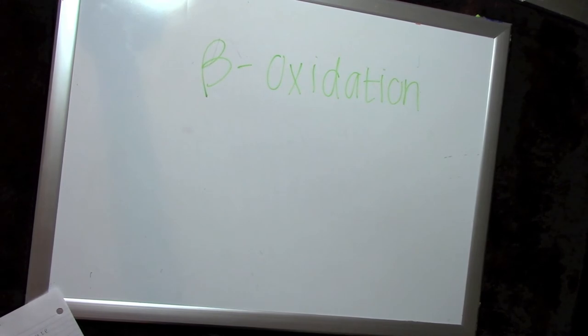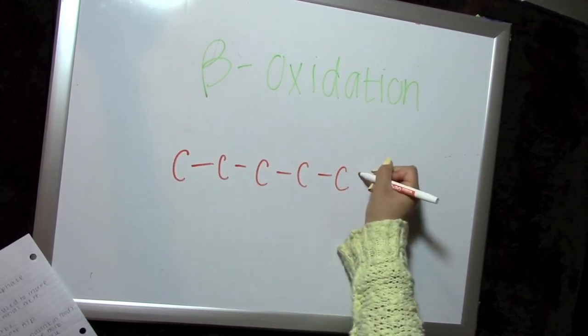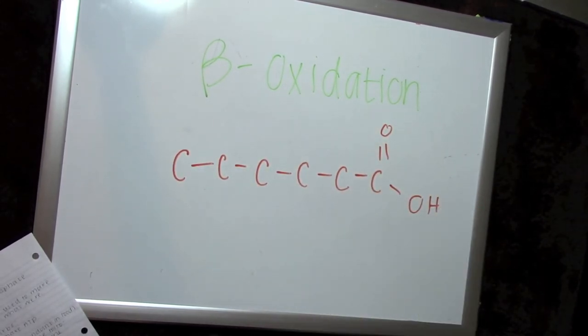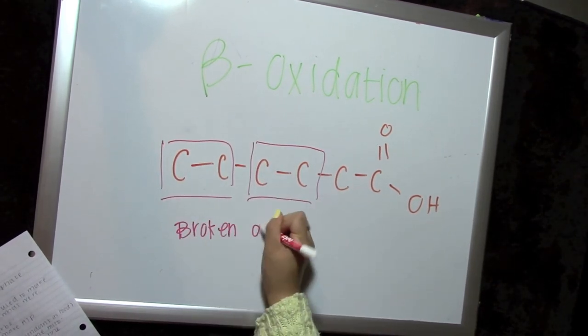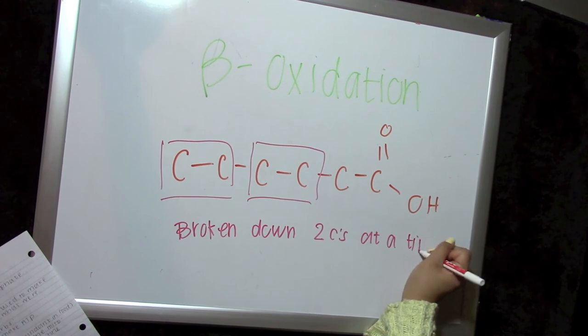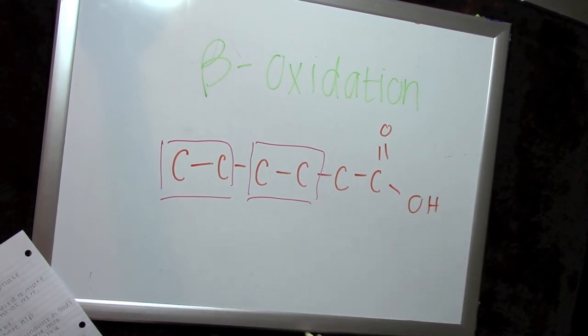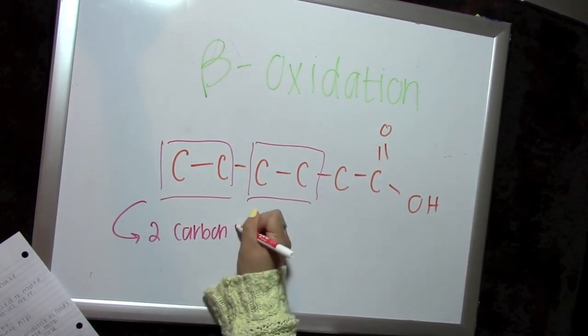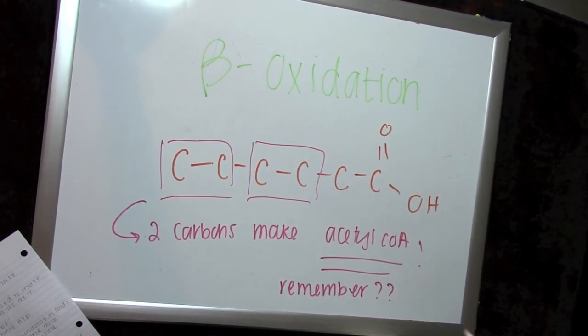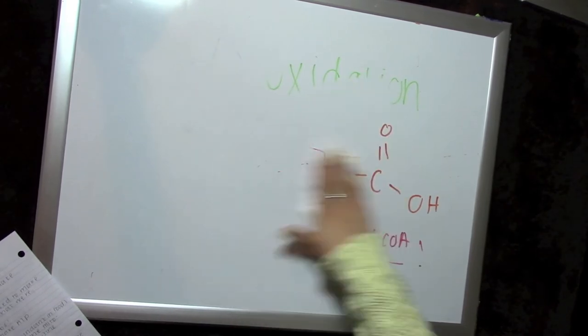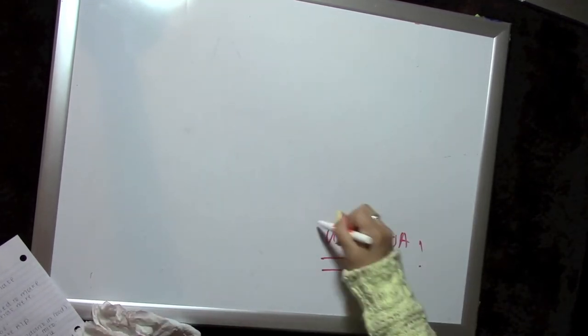Now we're going to be talking about beta oxidation. Once inside the mitochondria, through a series of steps, this fatty acid chain is broken down two carbons at a time. I've indicated that by showing you this is what a typical fatty acid molecule looks like, and two carbons are taken off every time, and those two carbons are made into acetyl-CoA.